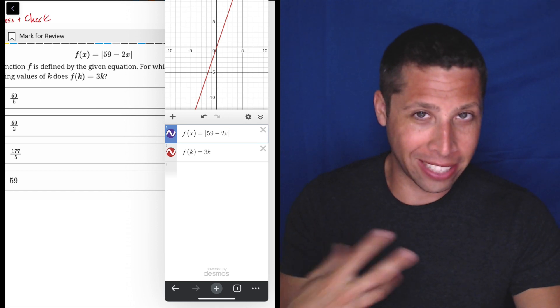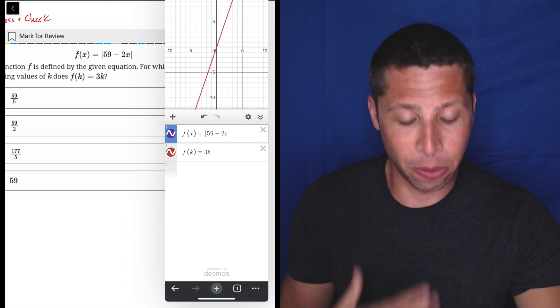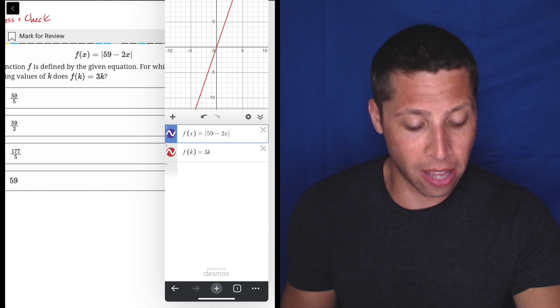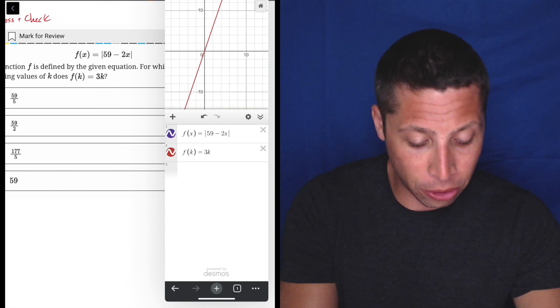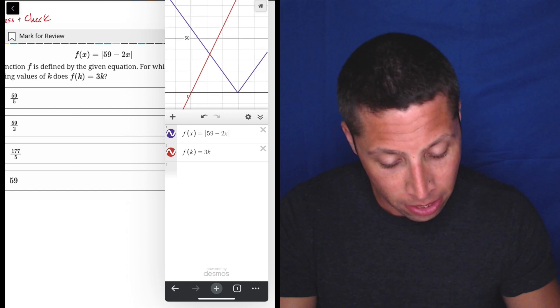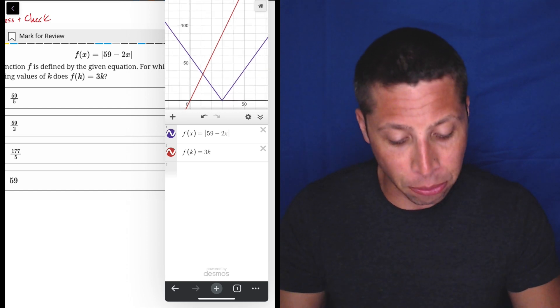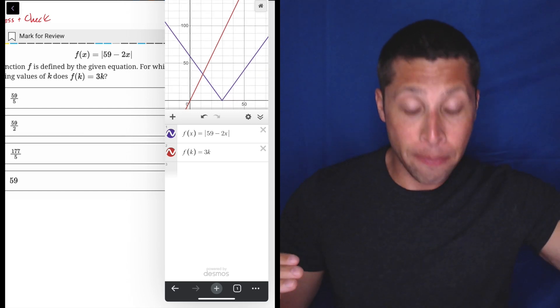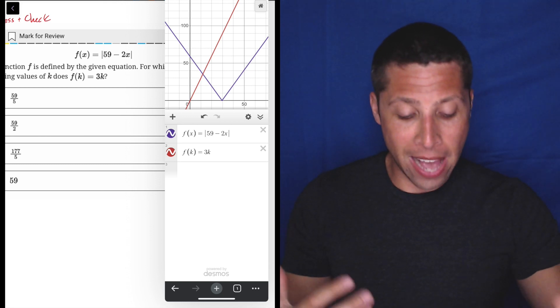So what the calculator is doing is it kind of knows that K means X here. So it's graphing that as basically a straight line. Where's my other thing though? Well, if we scroll, we can start to see our absolute value and it makes the familiar absolute value shape, which is a V.